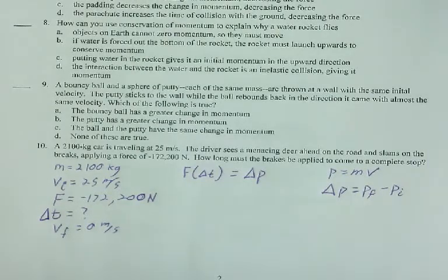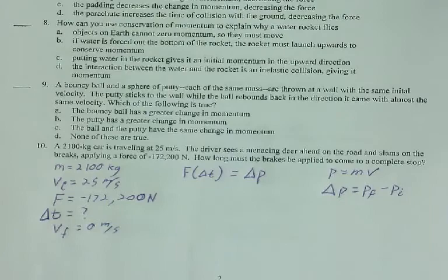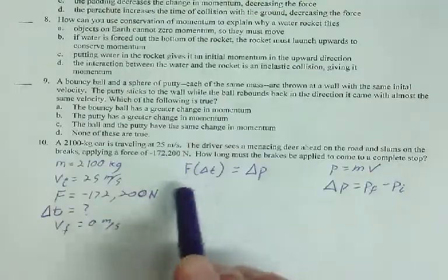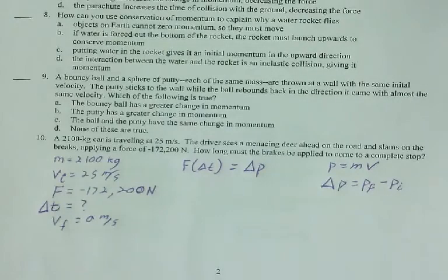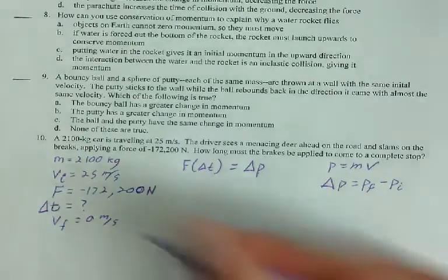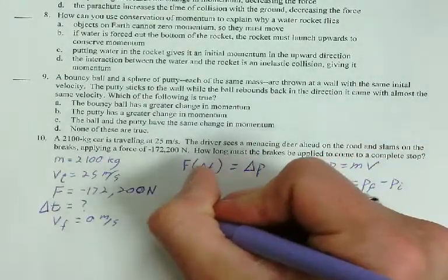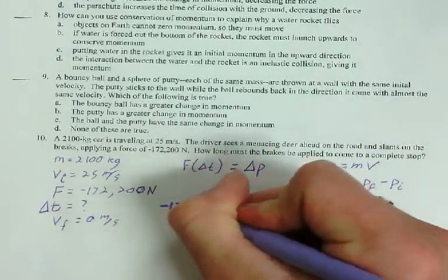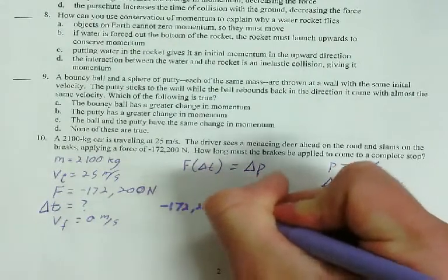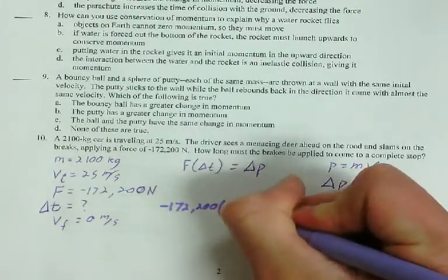Okay, so let's keep working here. So, the next step, the thing we need to figure out is we need to know how to plug this in. So, F is negative 172,200. Delta T is what I'm solving for.